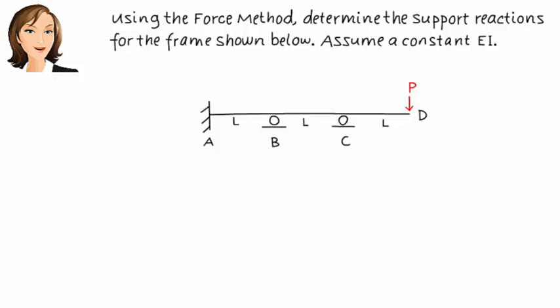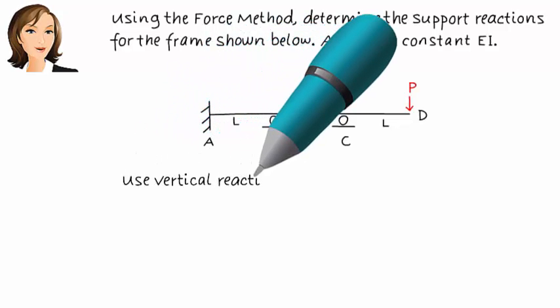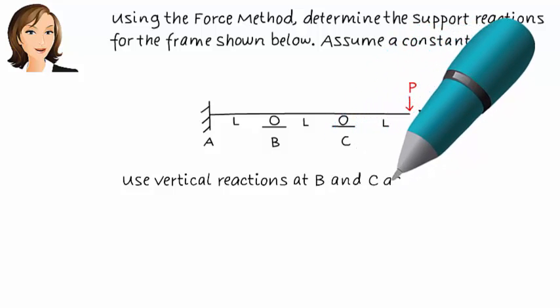The beam has a degree of indeterminacy of two, so we need to pick two of the reactions as redundant forces. Let's make the vertical support reactions at B and C redundant.